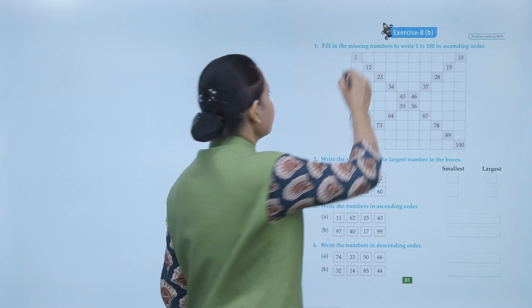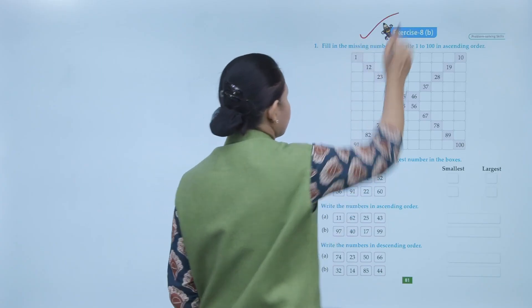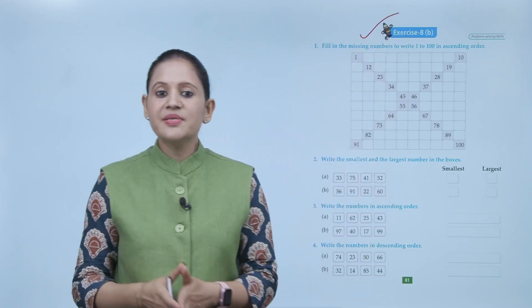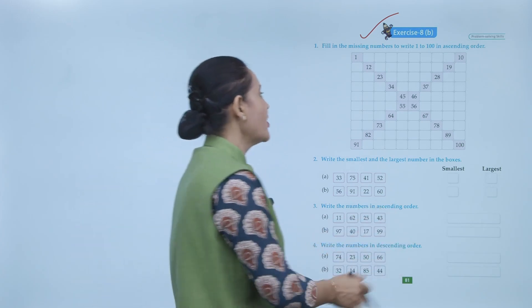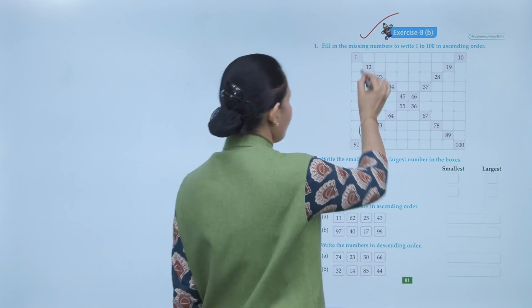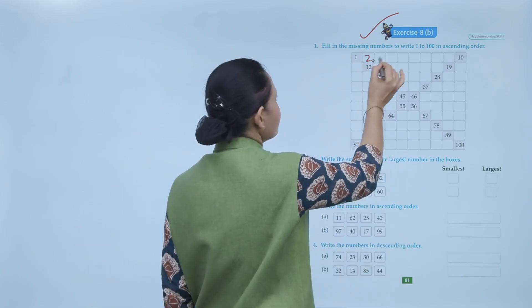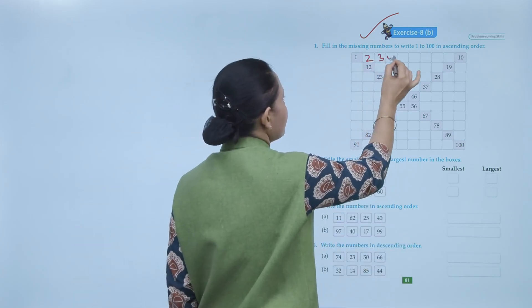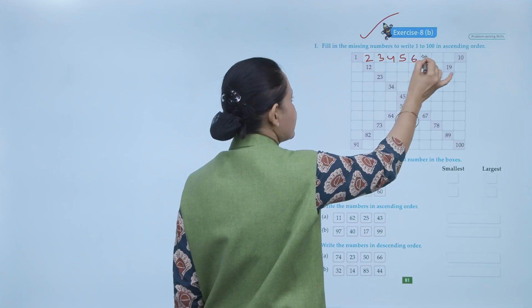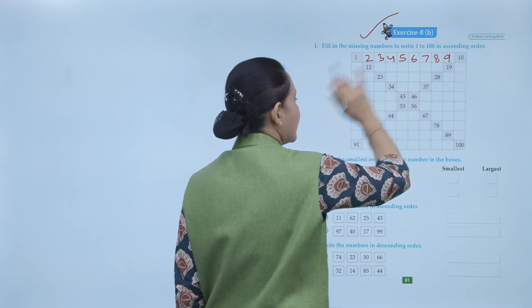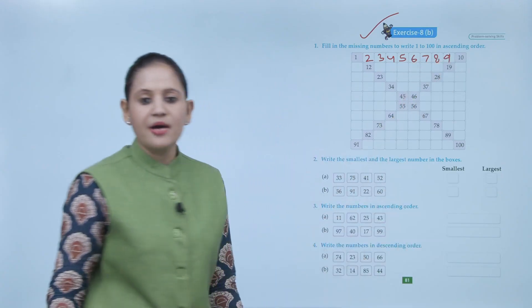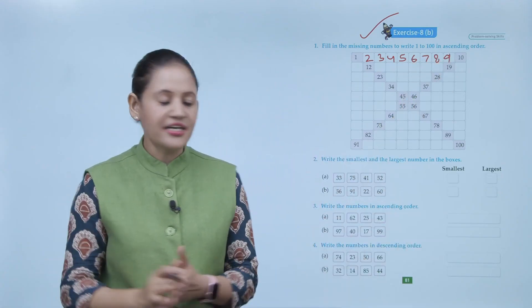Next is exercise 8B. Fill the missing number to write 1 to 100 in ascending order. So we have to write 1 to 100 in ascending order: 1, 2, 3, 4, 5, 6, 7, 8, 9, 10 — like this we will write numbers up to 100.